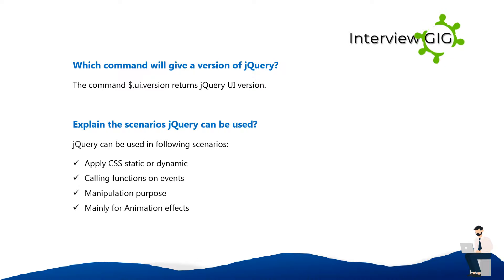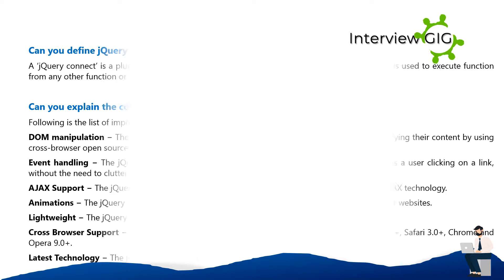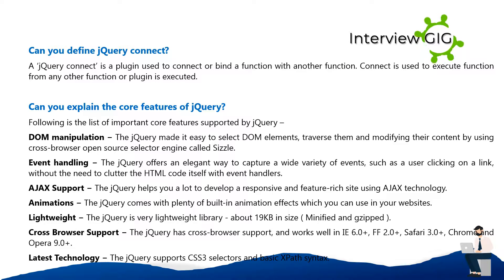Explain the scenarios where jQuery can be used. jQuery can be used in the following scenarios: applying CSS static or dynamic, calling functions on events, and for manipulation purposes, mainly for animation effects. What is jQuery Connect? jQuery Connect is a plugin used to connect or bind a function with another function. Connect is used to execute a function whenever a function from any other plugin is executed.